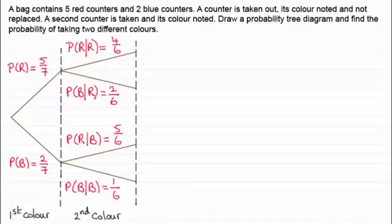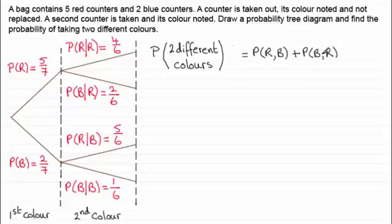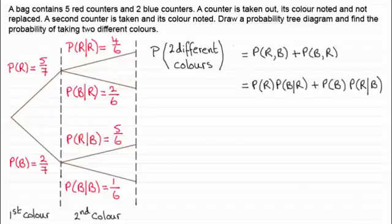As you'll see in this example where we've got to find the probability of taking two different colours. The probability of taking two different colours equals the probability of taking a red first and then a blue, or the probability of taking a blue first and then a red. These are mutually exclusive events, so we add those probabilities together. That means we have the probability of red times the probability of blue given red, plus the probability of blue times the probability of red given blue.